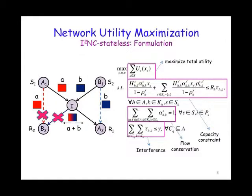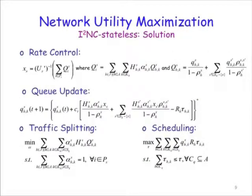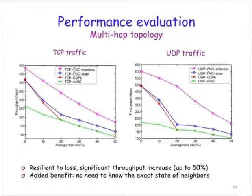We started with a network utility maximization formulation of the problem that incorporates the constraints and goals described before. Then we developed a distributed solution to this problem that provides the optimal control for the key components of the system, namely rate control, traffic splitting, queue update, and scheduling. We implemented a practical scheme that mimics the structure of the optimal solution and can be implemented as a thin layer sitting on top of MAC at the intermediate nodes and below the transport layer at the end nodes. We evaluated our scheme extensively through simulation using our own simulator in GloMoSim across different topologies.